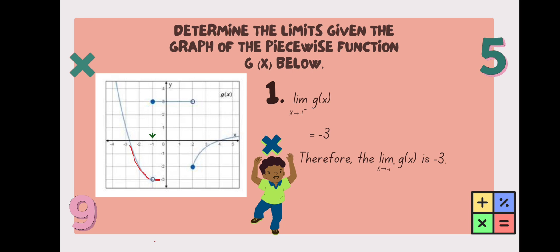Number 1: the limit of g of x as x approaches negative 1. First, we observe the graph. As x approaches negative 1, the value of y stops at negative 3. Therefore, we conclude that the limit of g of x as x approaches negative 1 from the left is equal to negative 3.